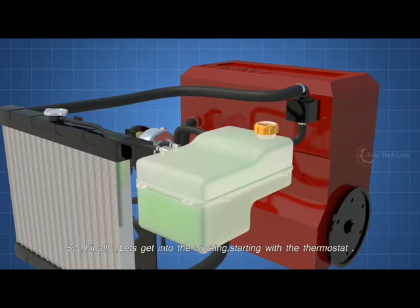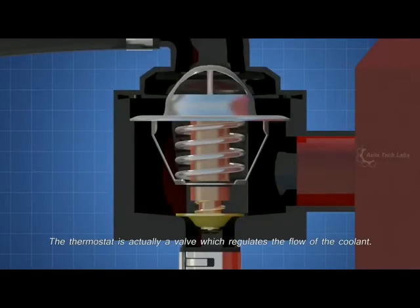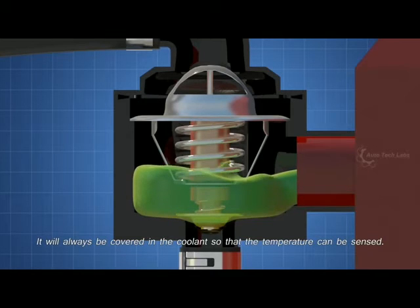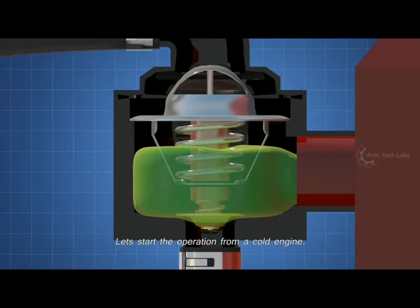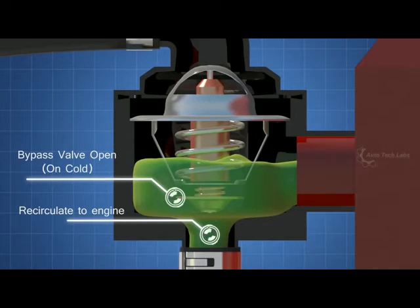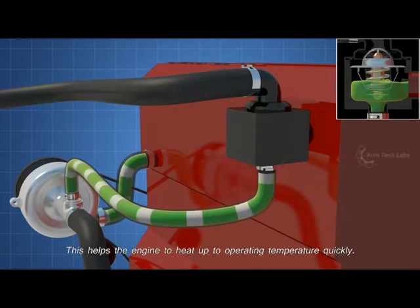Let's get into the working, starting with the thermostat. The thermostat is actually a valve which regulates the flow of the coolant. It will always be covered in the coolant so that the temperature can be sensed. Let's start the operation from a cold engine. When the engine is cold, the bypass valve stays open. So the coolant bypasses the radiator and recirculates through the engine. This helps the engine to heat up to operating temperature quickly.